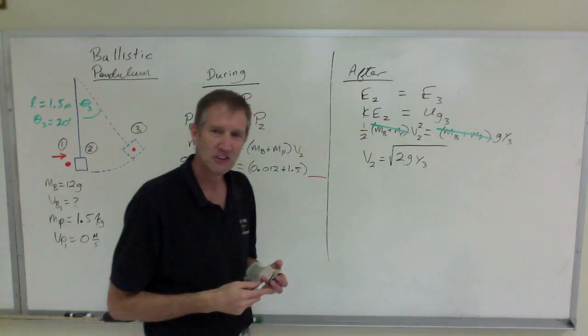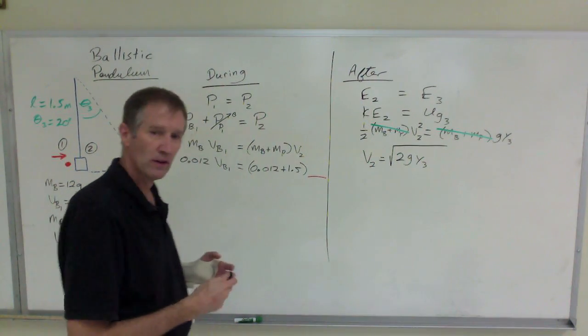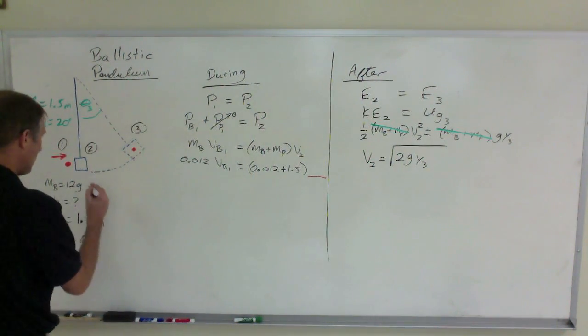That's going to be the square root of two times G times Y3. Now here's where the catch is. We don't know the value of Y3. We have to calculate it.